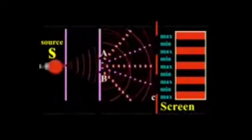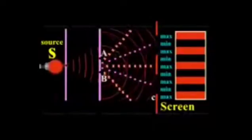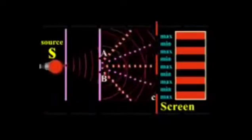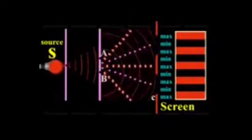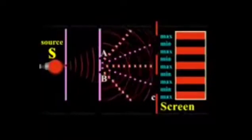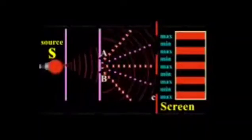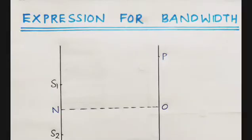Dear students, in the previous class we studied Young's double slit experiment and studied the definition for bandwidth. Bandwidth is the distance between two consecutive bright or dark bands. Here we are going to derive the expression for bandwidth. Bandwidth is represented by the letter beta.